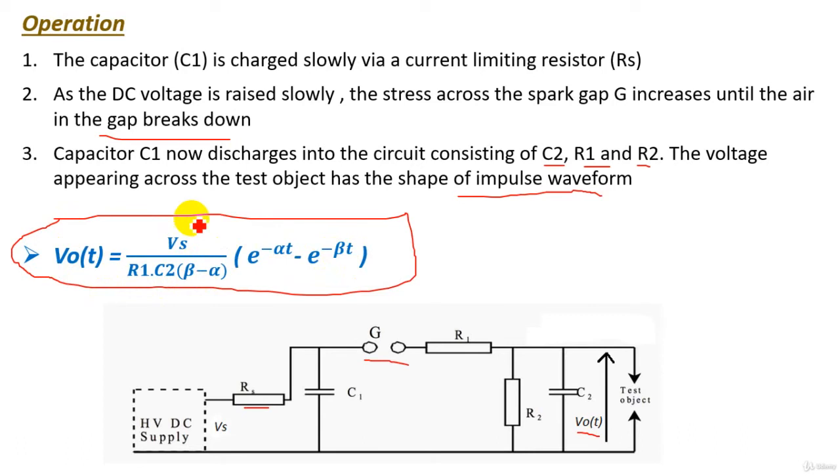Where Vs is the high voltage DC supply here, and R1 is the damping resistance, C2 is the load capacitance. Beta and alpha can be calculated from these equations. Alpha equals 1 over R1 C2, beta equals 1 over R2 C1. So this is the simple operation of our circuit.